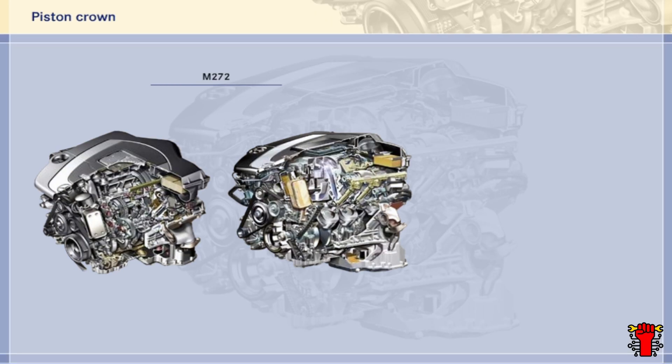There are two versions of the M272 V-configuration engine on the market: a port injection version and a direct injection version. In this program, we'll refer to the port injection version as the KE engine and the direct injection version as the DE engine.